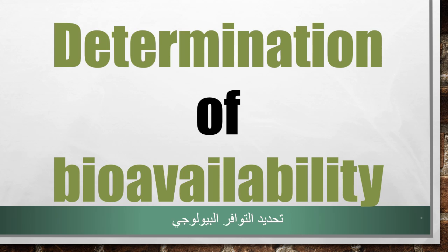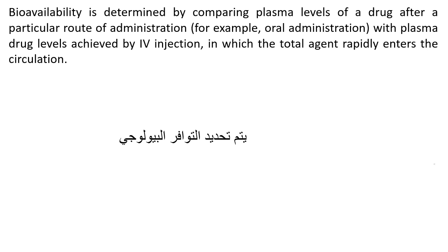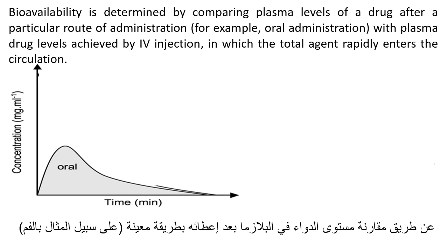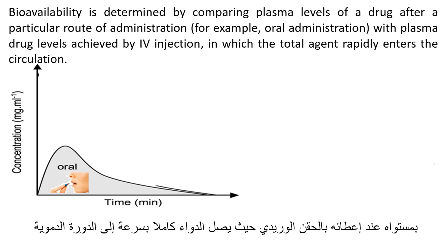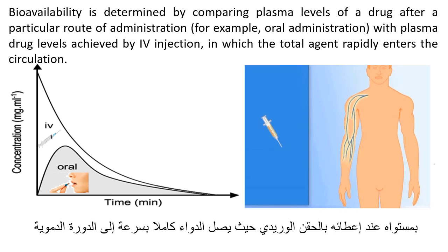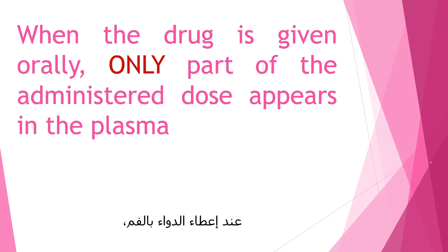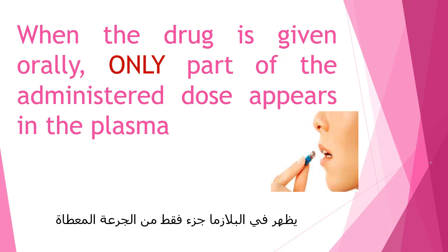Bioavailability is determined by comparing plasma levels of a drug after a particular route of administration — for example, oral administration — with plasma drug levels achieved by IV injection, in which the total agent rapidly enters the circulation. When the drug is given orally, only part of the administered dose appears in the plasma.